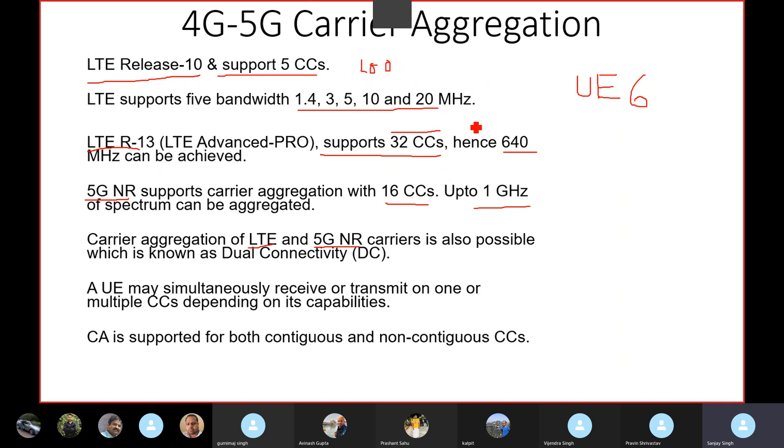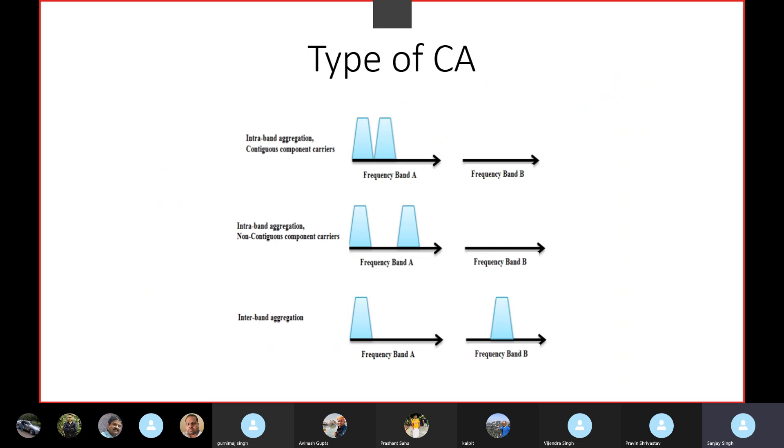So these are the basic understanding about Carrier Aggregation. If we talk about the type, it is Contiguous and Non-Contiguous. In LTE, we have three types of Carrier Aggregation, also in 5G as well. One is Intraband Carrier Aggregation that also called Contiguous Component Carrier. Another one is also Intraband and it is Non-Contiguous and third one is Interband Carrier Aggregation. So let me help you understand why it is called Contiguous and why it is called Non-Contiguous.